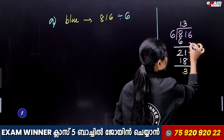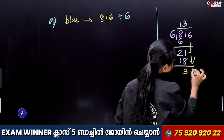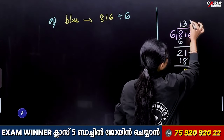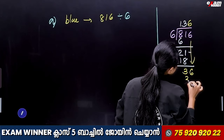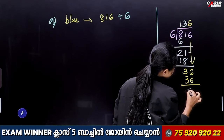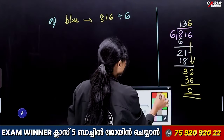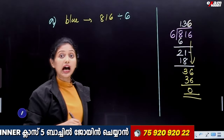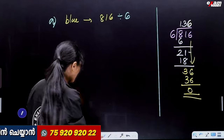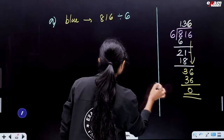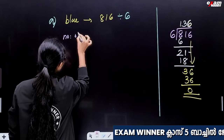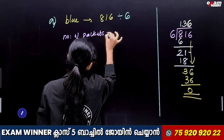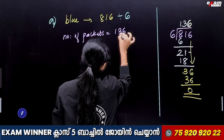6 sixes are 36. 36 minus 36 is 0. So the remainder is 0. The answer is 136. Number of packets is equal to 136.